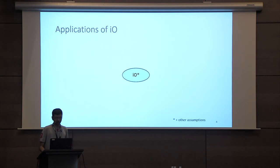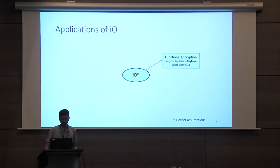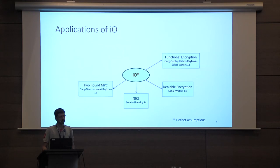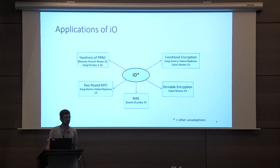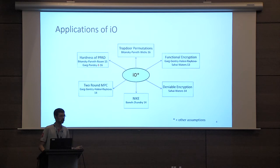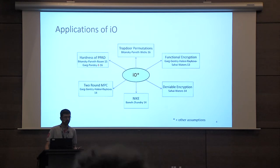To give a few examples, IO has been used to construct functional encryption, deniable encryption, non-interactive key exchange, two-round multi-party computation protocols. It has been used to prove hardness of the complexity class PPAD, and it has also been used to construct trapdoor permutations. These are just a handful of examples and there are several other cool applications of IO.